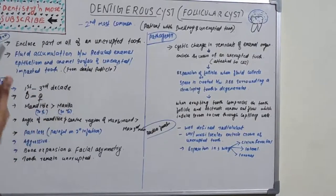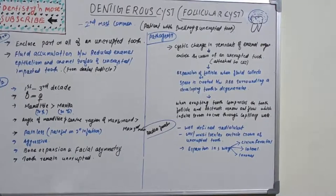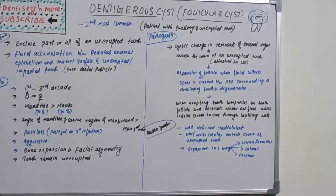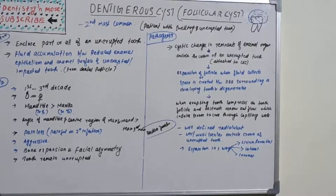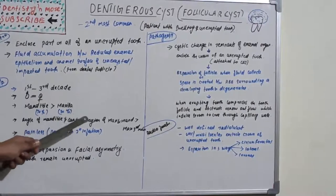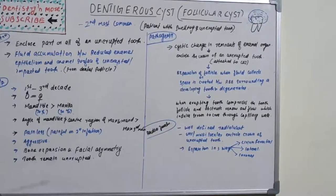Dentigerous cyst is basically derived from the dental follicle. In clinical features, it is most commonly seen in the first, second, and third decade. There is no gender predilection — males and females are equally affected. The mandibular areas are more commonly affected, with 70 percent of cases in the mandible compared to 30 percent in the maxilla. In the mandible, the angle region is most commonly affected, followed by canine regions.